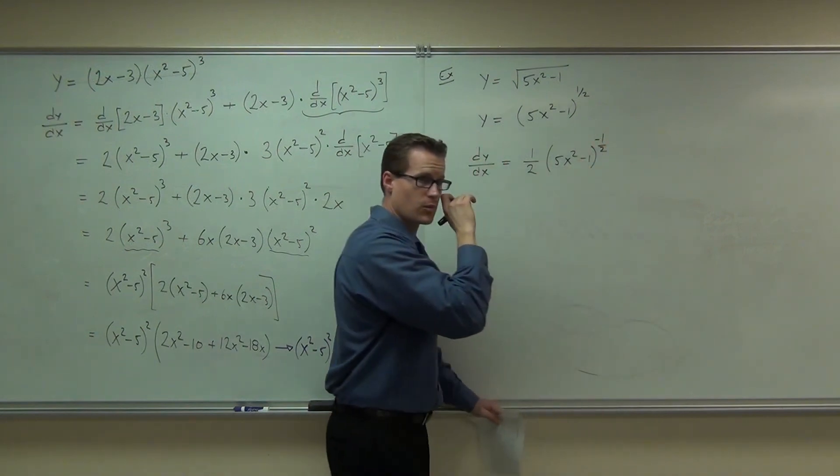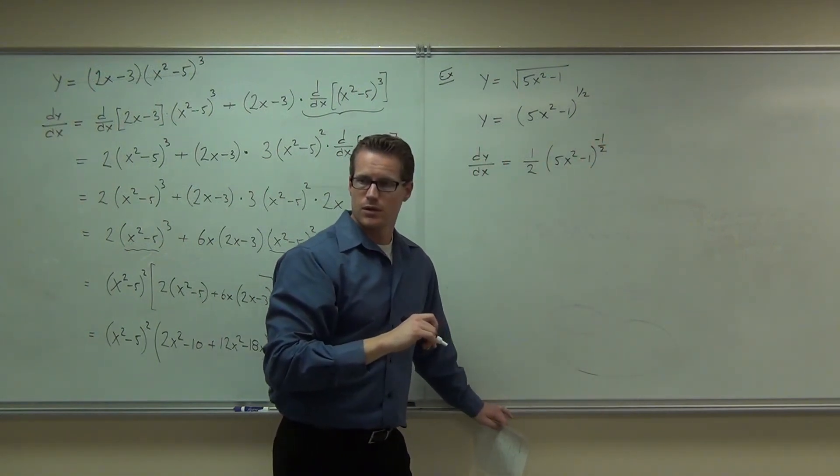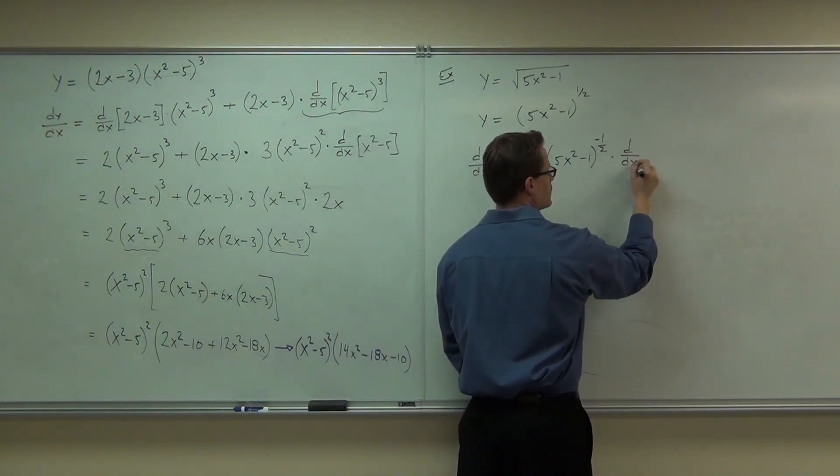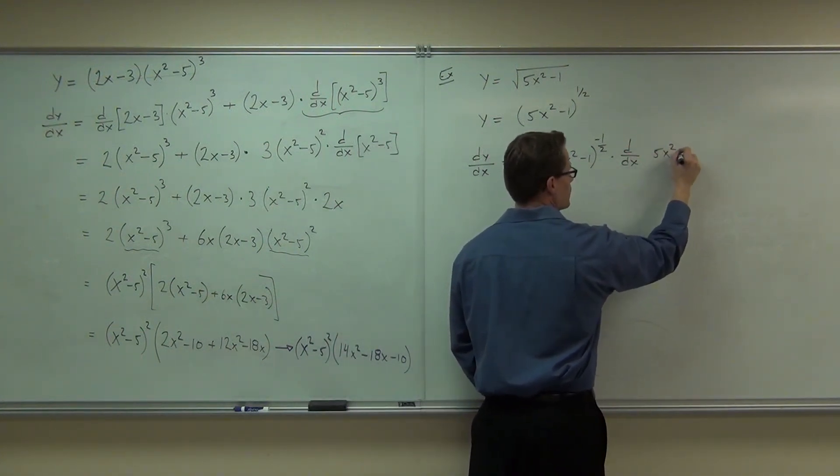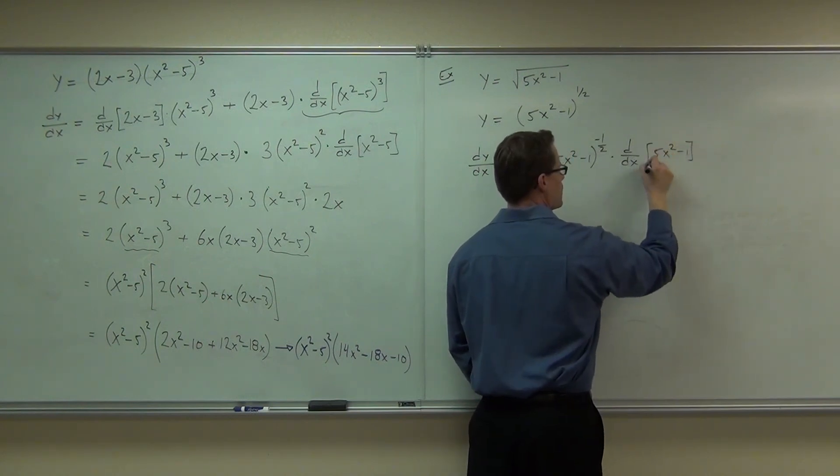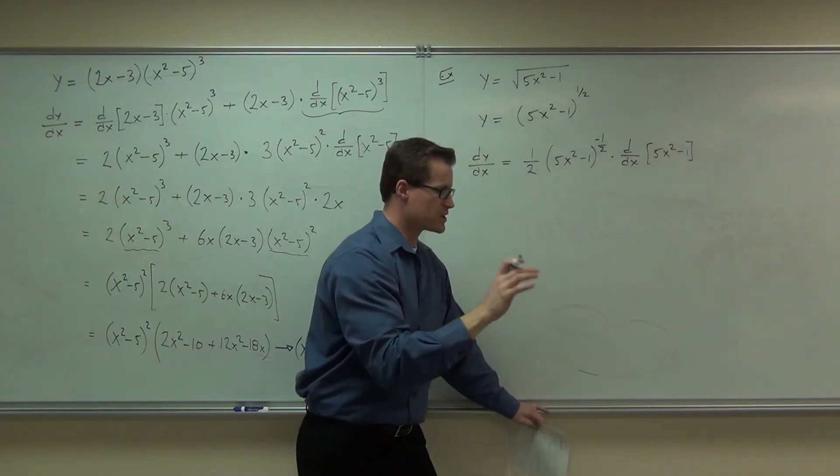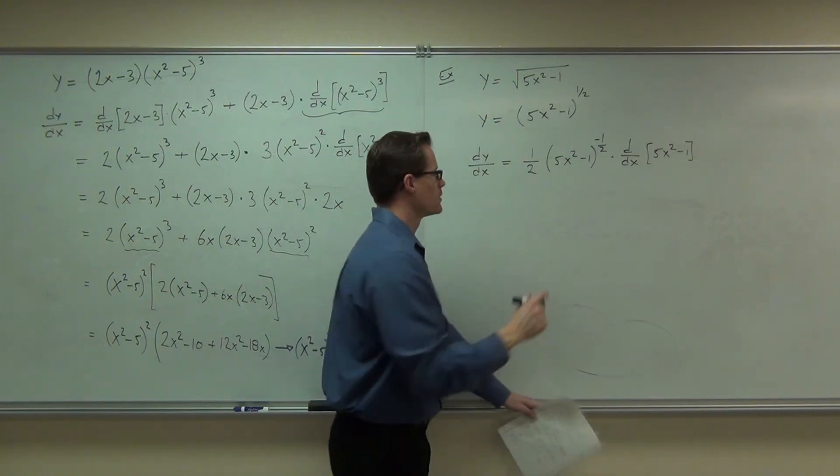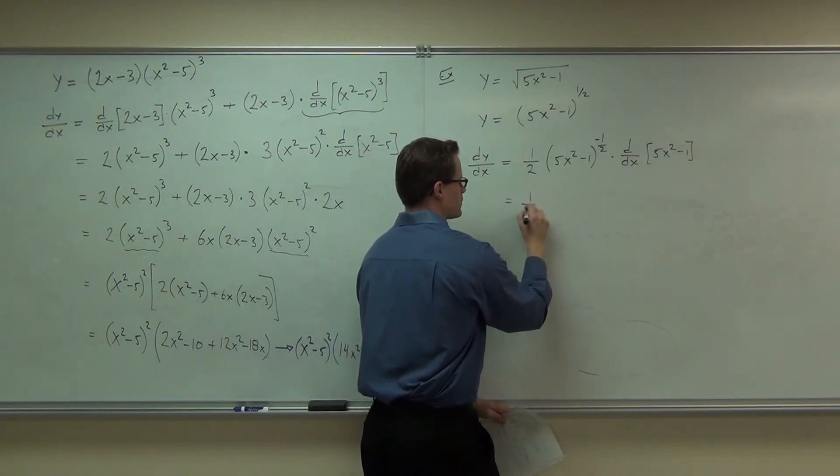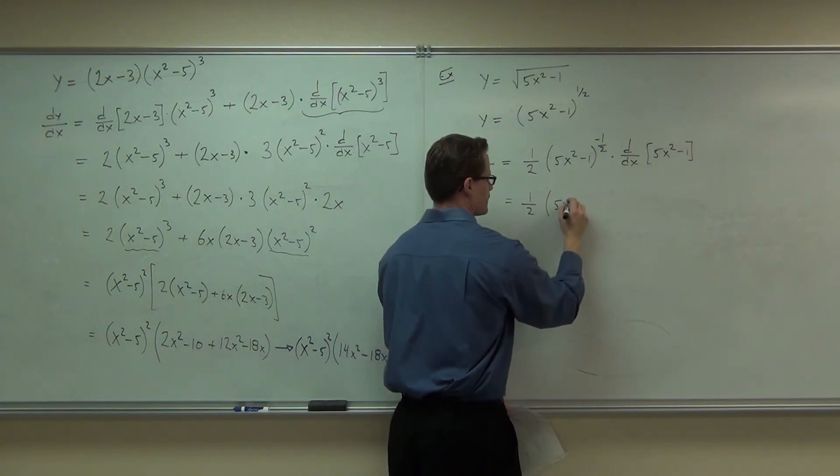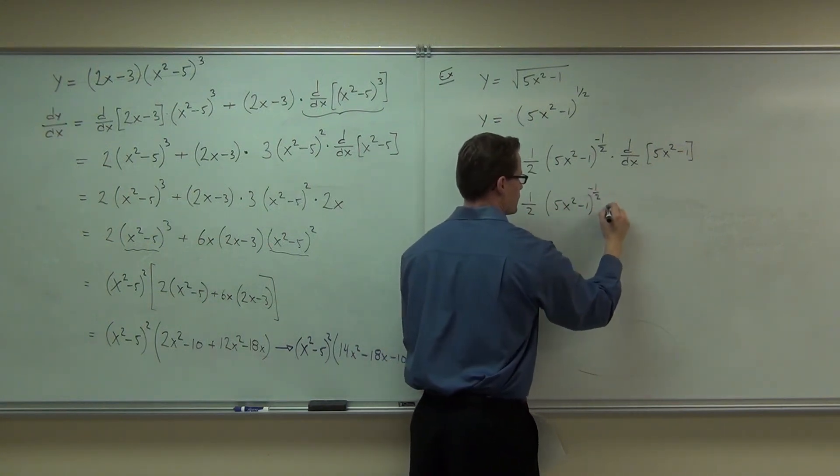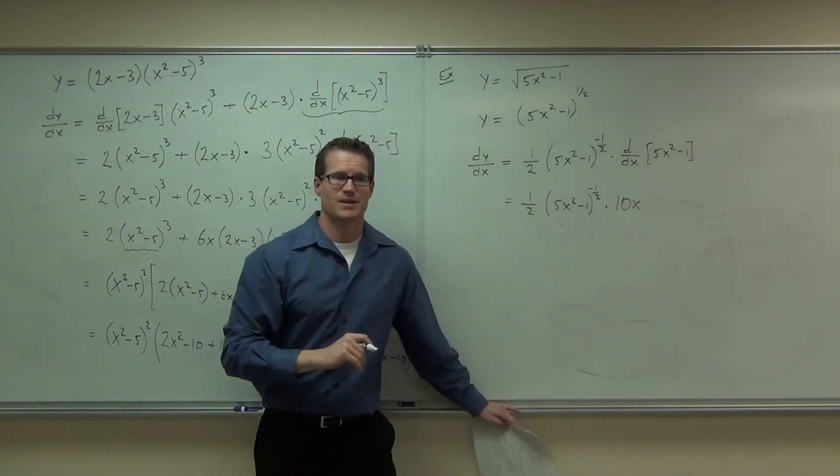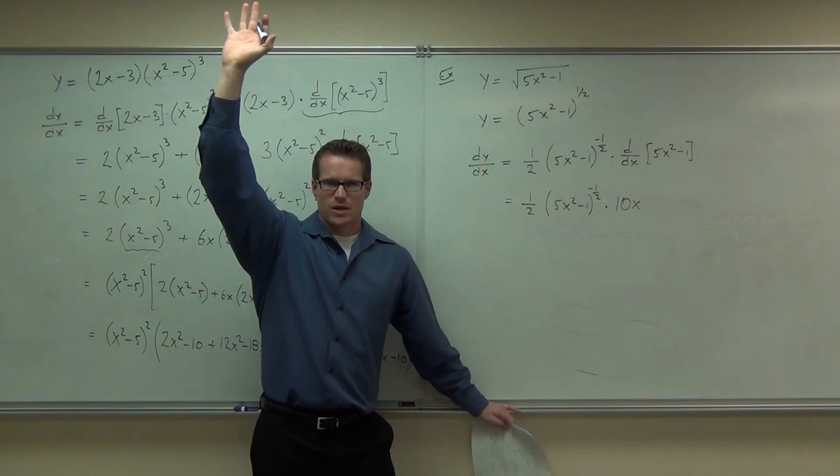Did you make it that far, 1 half 5x squared minus 1 to the negative 1 half? Cool, inside doesn't change for now. And then we take the derivative of the function itself, the inside function of our composition, or the piece of our composition. If we take that derivative, then we're just about done. Did you get the 10x, too? How many people got exactly that on their paper? Good for you.